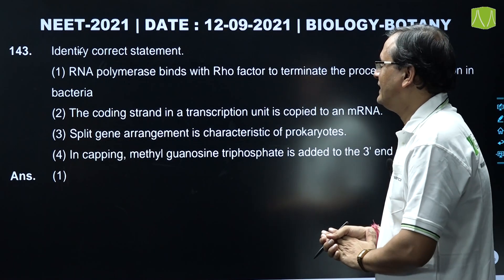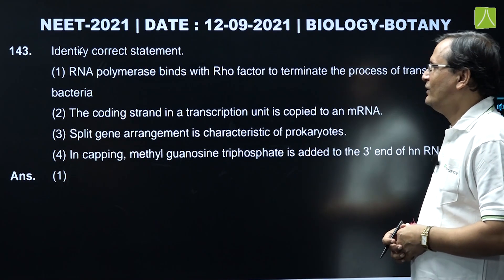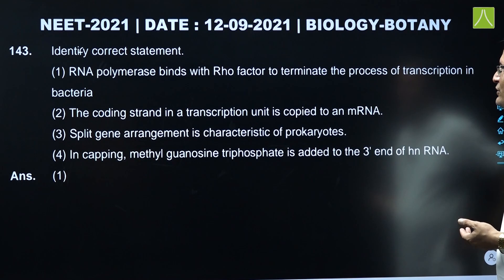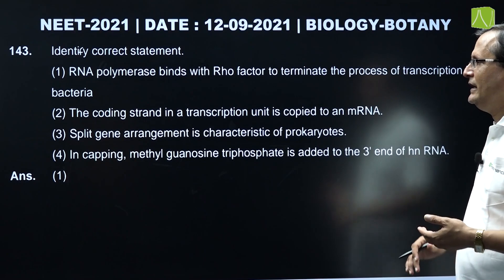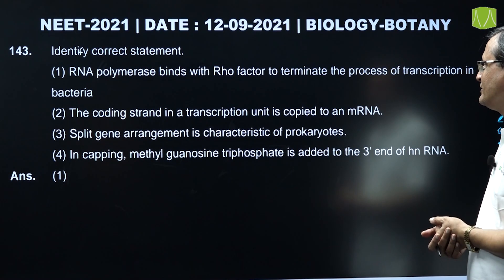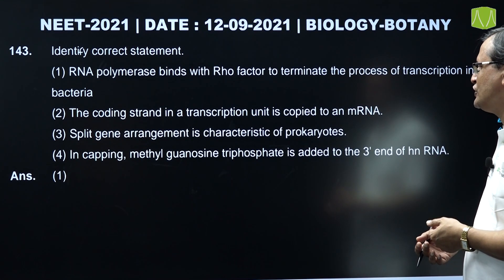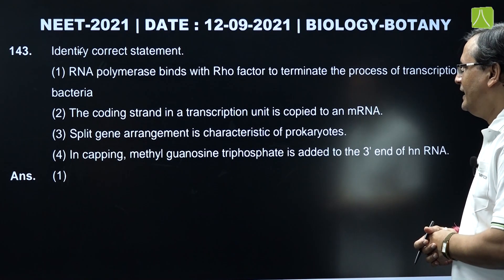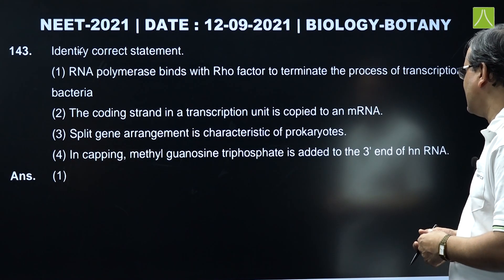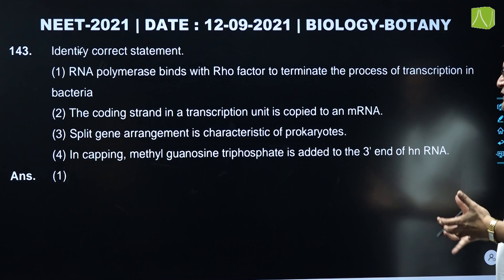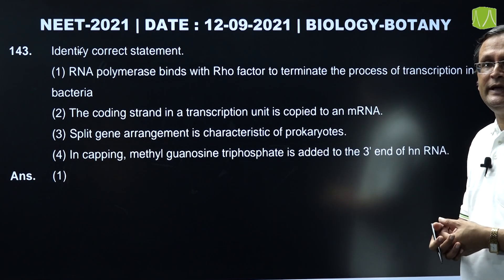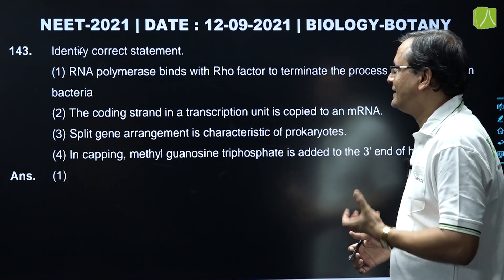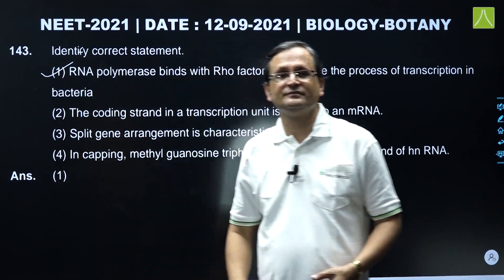Question 143: Identify the correct statement. Option 1 - iron polymerase binds with rho factor to terminate the process of transcription in bacteria - this is absolutely correct. Option 2 - the coding strand in a transcription unit is copied to an mRNA - this is wrong; actually it is the antisense strand that is copied. Option 3 - split gene arrangement is characteristic of prokaryotes - also wrong, split gene arrangement does not occur in prokaryotes. Option 4 - in capping, methyl guanosine triphosphate is added to the 3-prime end of hnRNA - this is wrong; it is added to the 5-prime end. At the 3-prime end, poly-A (200-300 bases) is added. So the correct answer is option one.